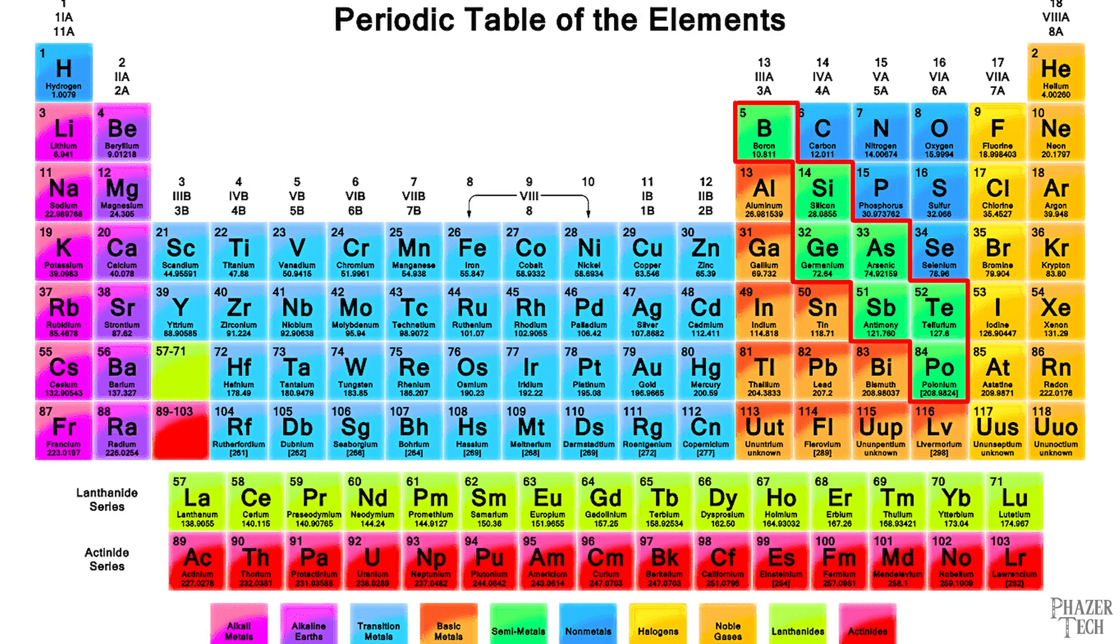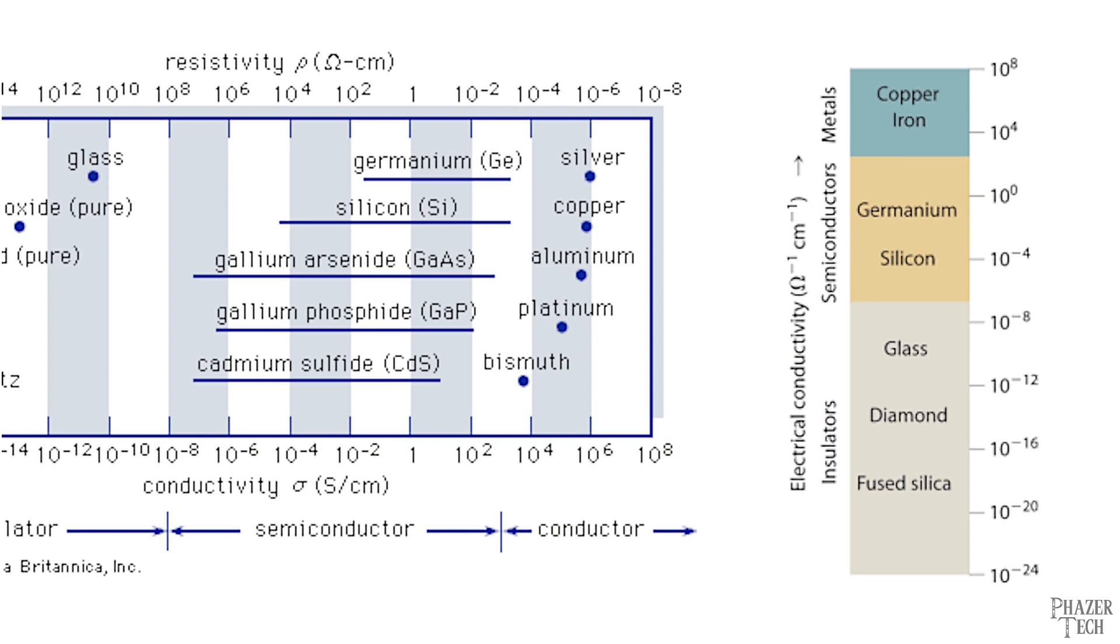Silicon, germanium, and gallium arsenide are all in this green region here that's classified as semi-metals. In general, metals are typically conductive of electricity, while non-metals are typically not conductive. Semi-metals sit in a gray area between conductive and non-conductive, which is where the name semiconductor comes from.